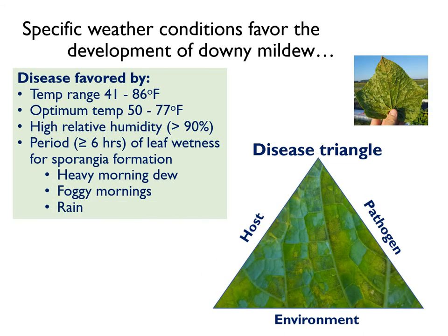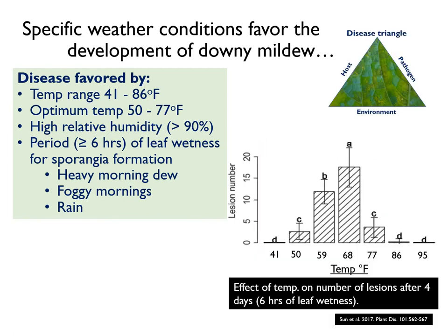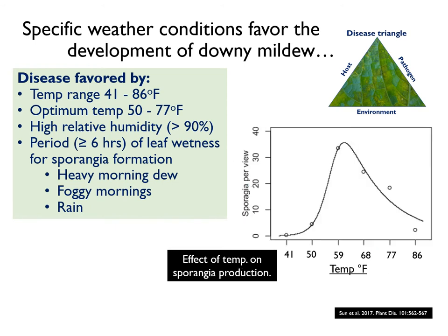P. cubensis requires conditions of high relative humidity, with 6 hours of leaf wetness ideal for leaf infection. Air temperature between 50 to 77 degrees Fahrenheit is optimal for successful infection, with symptoms developing 3 to 12 days after infection. The same temperature range also favors subsequent sporangia production.